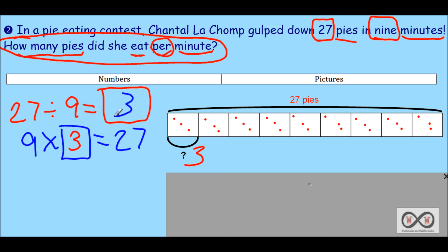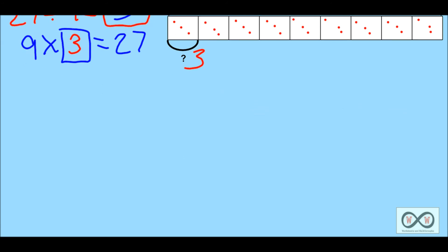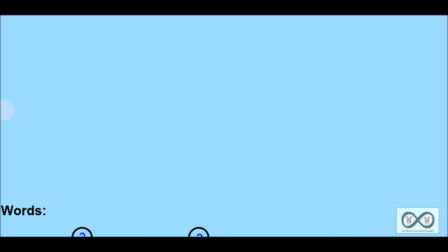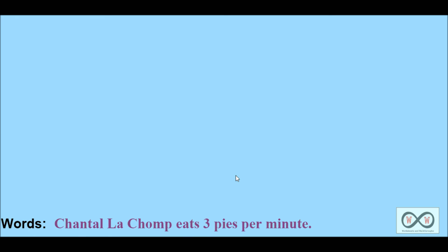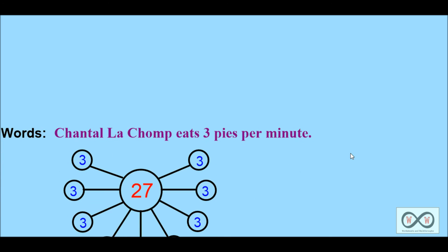We've shown our work with numbers and pictures. Now we need to put it into words. 'How many pies did she eat per minute?' — Chantal LeChamp eats three pies per minute. You were absolutely correct.